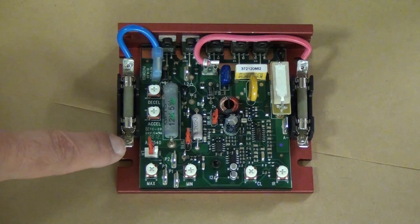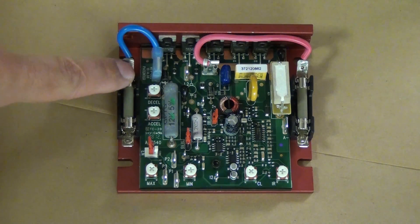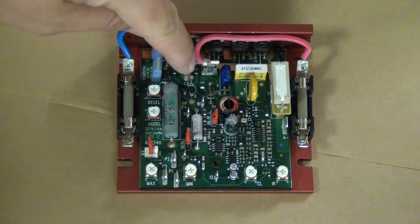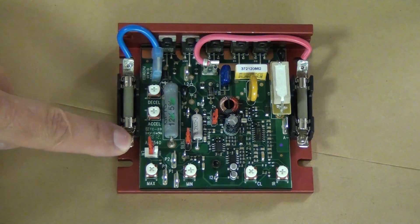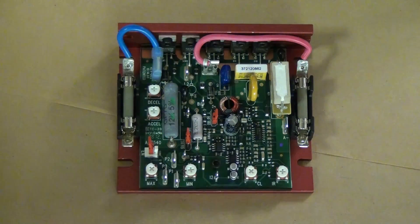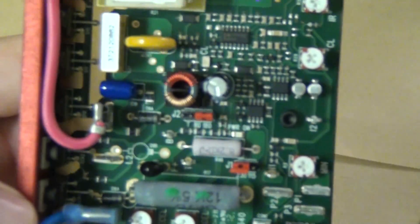What I'm pointing to here is the fused incoming AC line, and then there's the second line. This is where you'll bring your power from the wall. And then these two terminals are the DC lines that you'll take up to the motor.